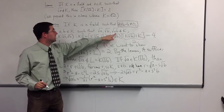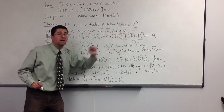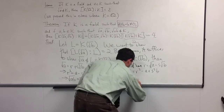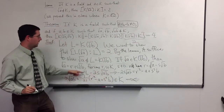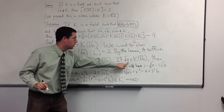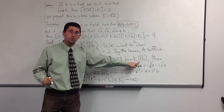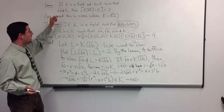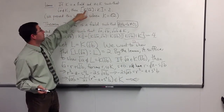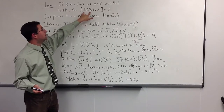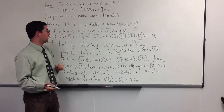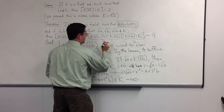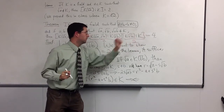But that's a contradiction, because we assumed √(ab) was not an element of k. The contradiction came from our assumption that √a was an element of k(√b). So √a is not in L, and therefore by the lemma, L(√a) has dimension 2 over L. Combined with the dimension 2 of k(√b) over k, we get 2 × 2 = 4 for the total dimension.